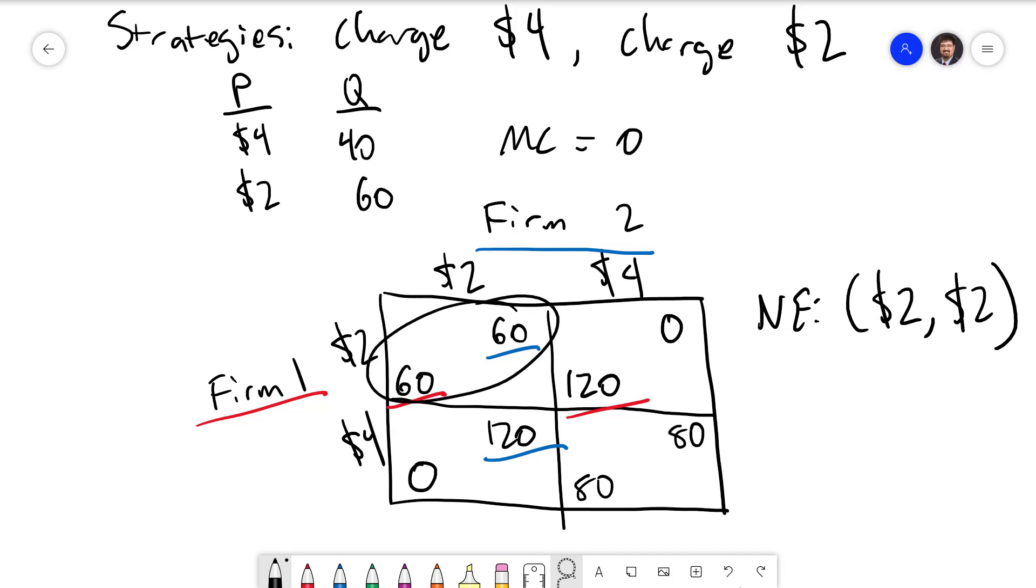Just like with the prisoner's dilemma, the 2 firms here could have done better had they been able to cooperate and agree to both charge $4. They would have both made 80 profit. The problem is, it's always individually better to try to undercut and charge $2. Or prevent oneself from being undercut by charging $2.